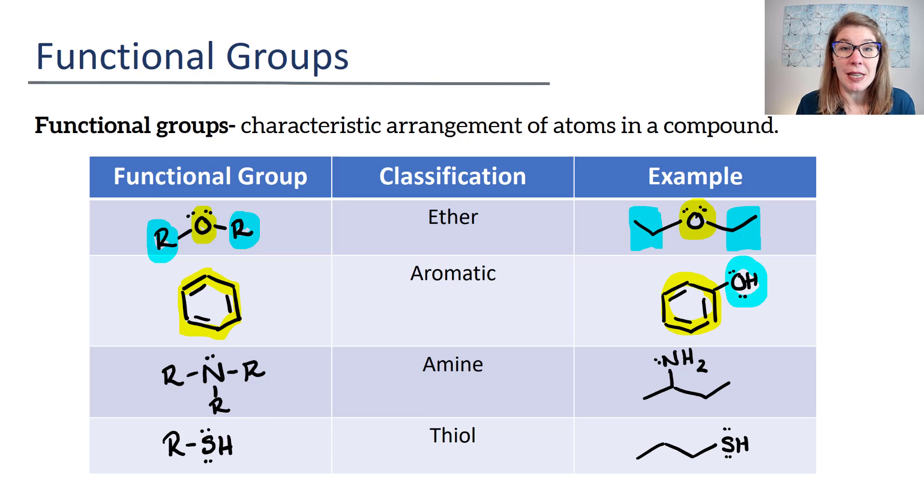The next functional group is an amine. Your amine has a nitrogen and then three R groups attached, where those three R groups could be hydrogen or an alkyl group, keeping in mind that an alkyl group is a carbon and hydrogen chain. Finally, on this page, we end with a thiol.